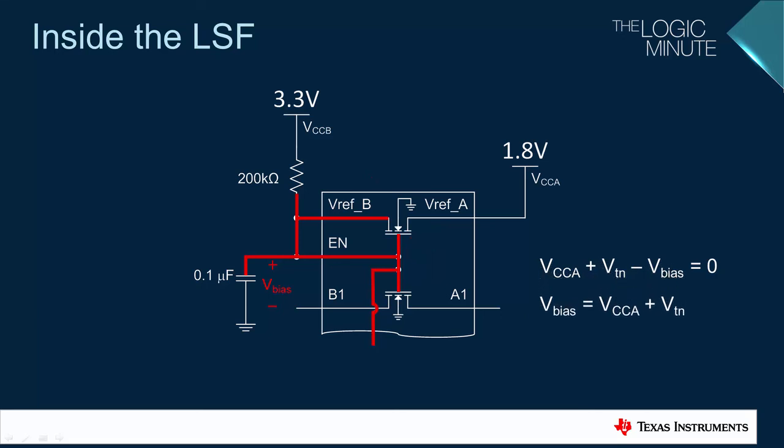The bias voltage turns out to be the A supply value plus the FET's threshold. This voltage, which we will call the gate bias voltage, or just V bias in the next few videos, is crucial for operation of the LSF family of translators.